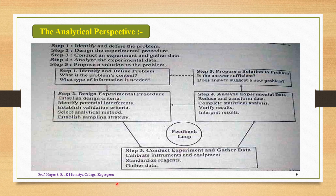In order to carry out an analytical study of a particular sample, we must know the analytical perspective — what type of steps we have to follow. This study can be carried out in five different steps. Step one: identify and define the problem. Step two: design the experimental procedure. Step three: conduct the experiment and gather the data. Step four: analyze the experimental data. Step five: propose a solution to the problem. By following these five steps, we can get a detailed study of a particular sample.